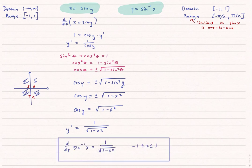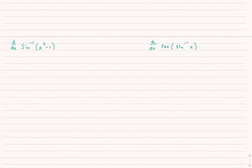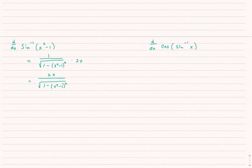This is one you're going to have to commit to memory. For the first example, I need to use not only the inverse sine rule I just derived, but the chain rule as well. The derivative is 1 over the square root of 1 minus the quantity (x squared minus 1) squared, times the derivative of the inside, which is 2x. I could simplify further, but I'm not really interested in simplification because you can easily make a mistake there even when you can correctly do the actual derivative.